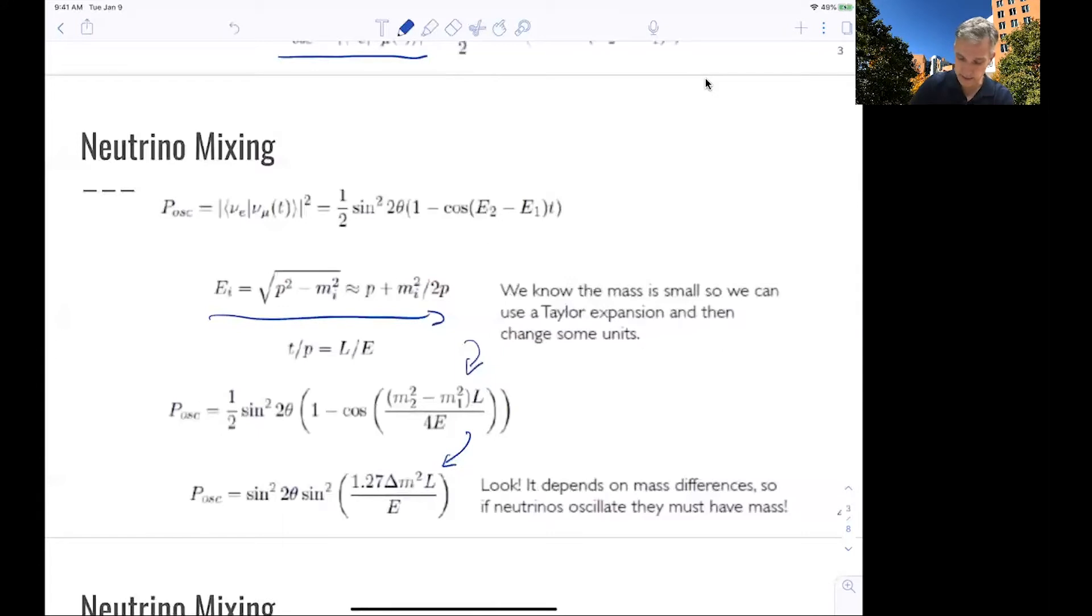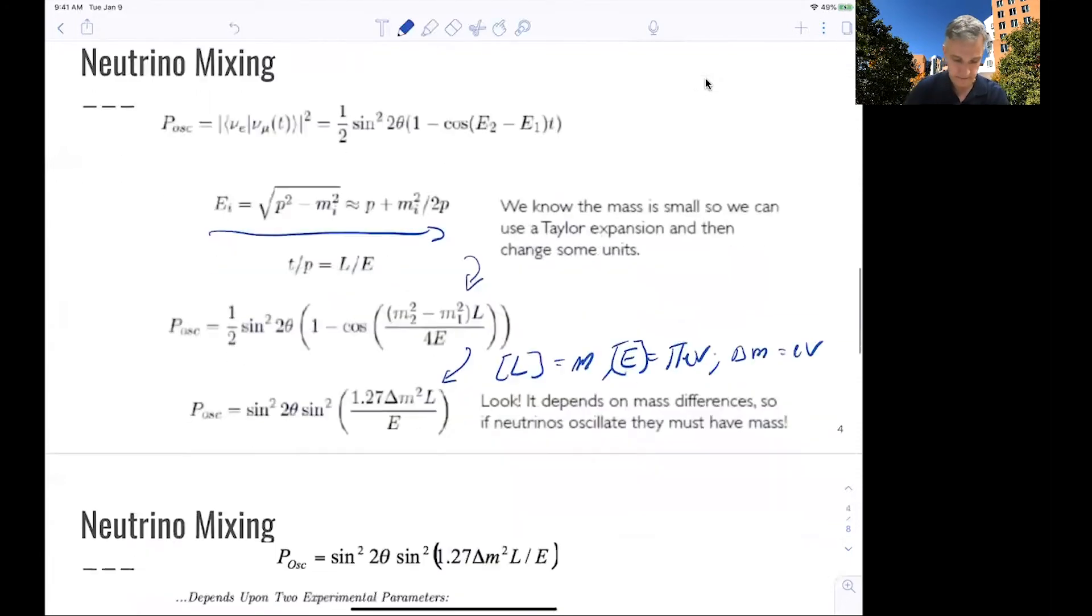I should add here that in this case, in this formula, the length is given in meters. The energy is given—the unit of the energy is MeV, and the mass difference is in eV. Otherwise, the equation doesn't make sense.